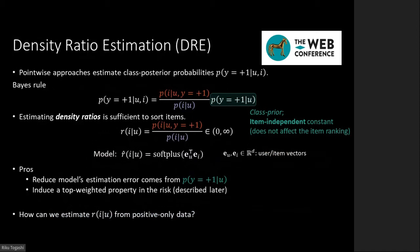The risk based on PU learning can still suffer from ranking ineffectiveness due to the formulation based on class posterior estimation. In this study, we tackle the ranking ineffectiveness of the pointwise approach. In the inference phase of top-K item recommendation, we sort items according to the predicted class posterior probabilities. By using Bayes' rule, a class posterior can be decomposed into three probability densities. Because the class prior is item-independent, it does not affect item ranking for a given user. Therefore, estimating density ratios is sufficient to predict item rankings.